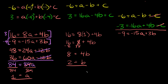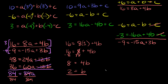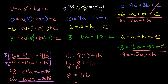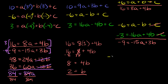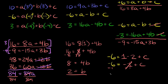Now we need to find c, so we go back to one of the original three equations. Using the second one: -6 = (1) - (2) + c, which gives -6 = -1 + c. Adding 1 to both sides, we get c = -5.